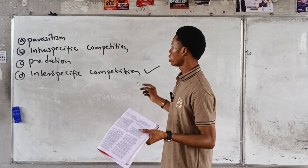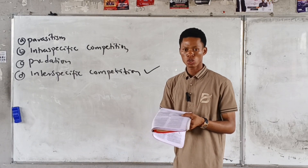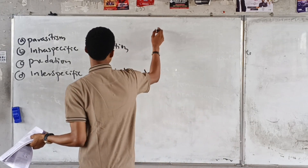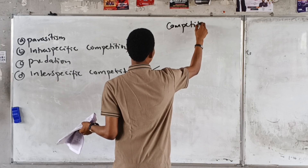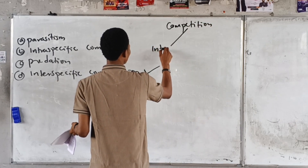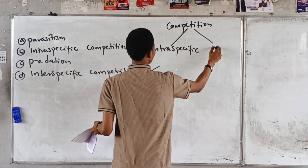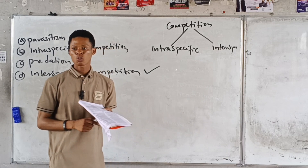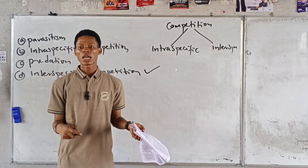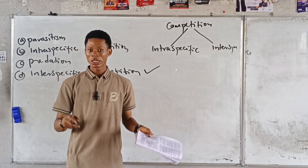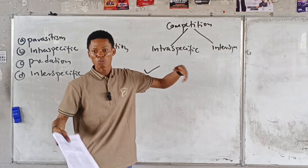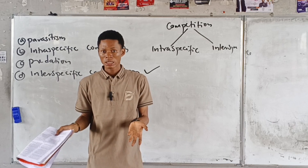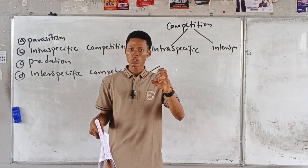The answer is D — interspecific competition. Why? We are looking at competition between toad and lizard. There are two types of competition: intraspecific and interspecific. The easiest way to remember it is interhouse sport — between different houses. Interspecific competition is between two different species of organisms competing for scarce resources.